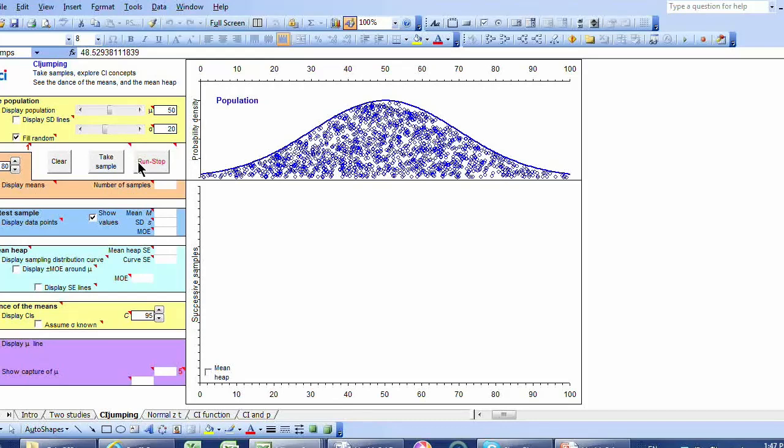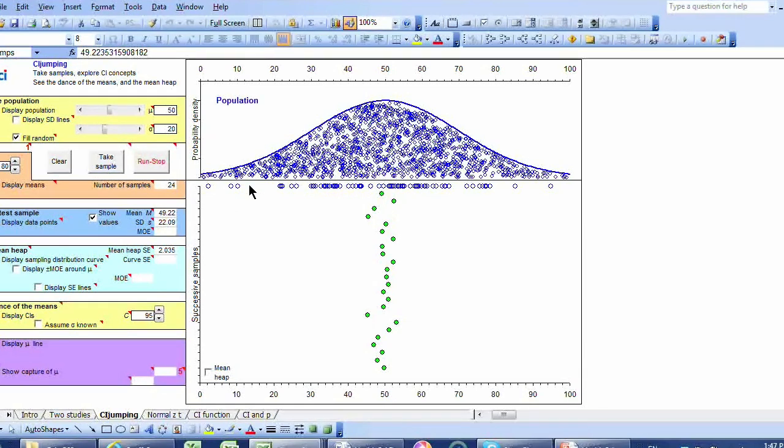The great thing about a simulation is that we can play around with values. I'm putting the sample size there up to 80, and now I'm going to take some samples, and each sample, of course, is much bigger. I've got 80 points there instead of 20. And these means are much less variable. They jump around less from side to side. It's a less frenetic dance. And that's, of course, why we take big samples.